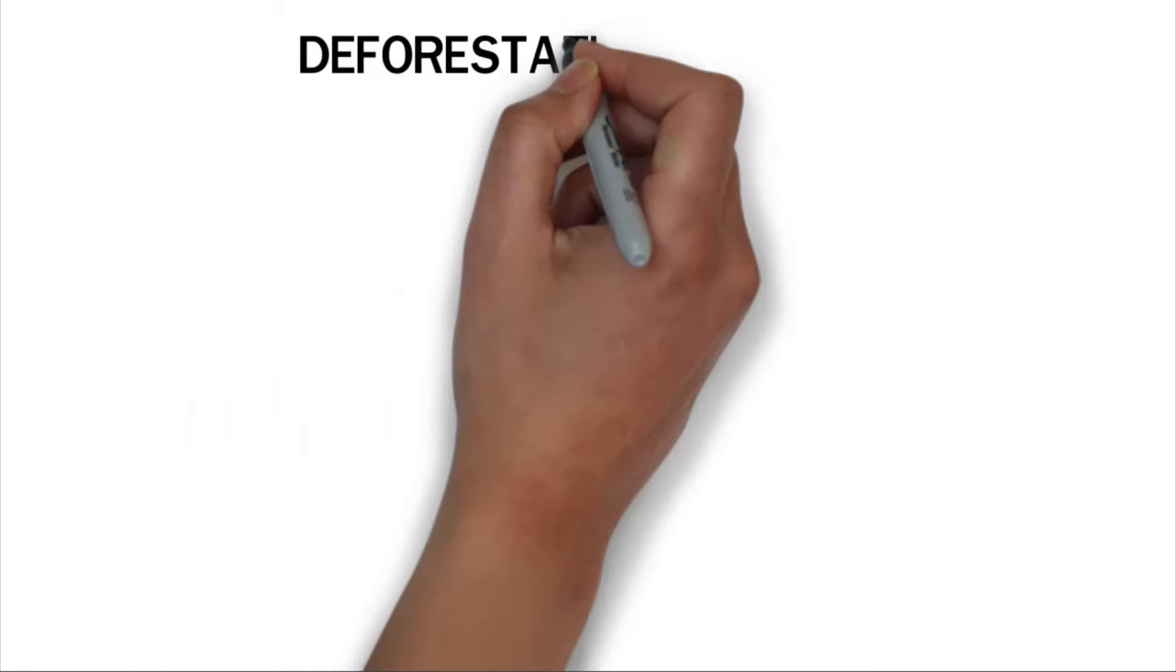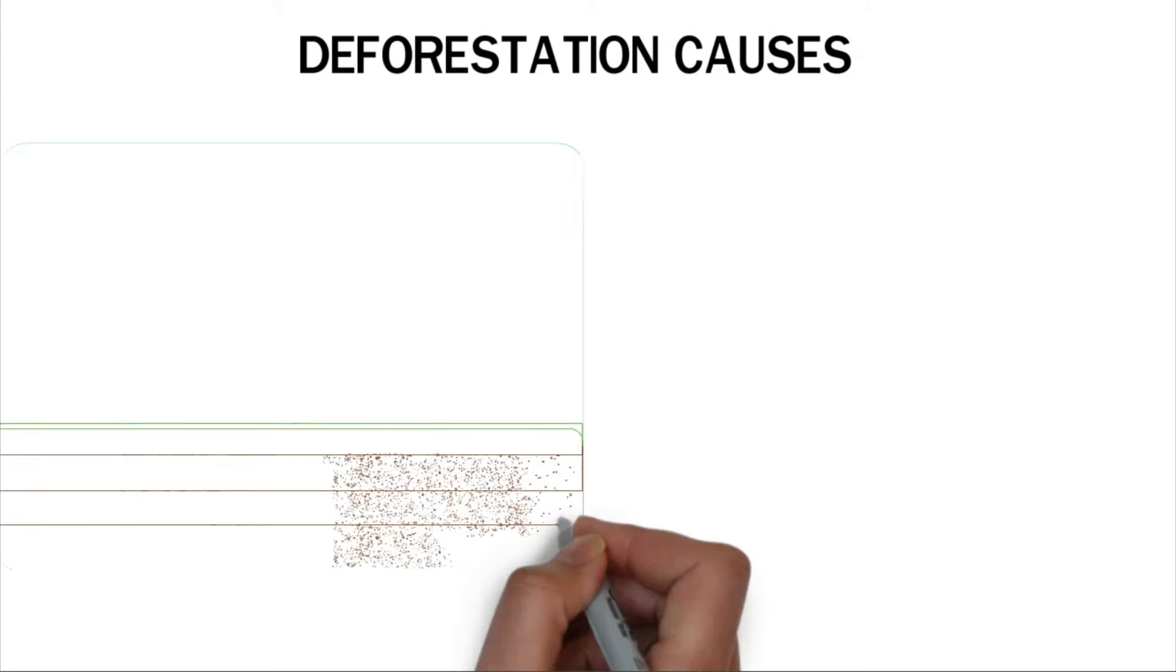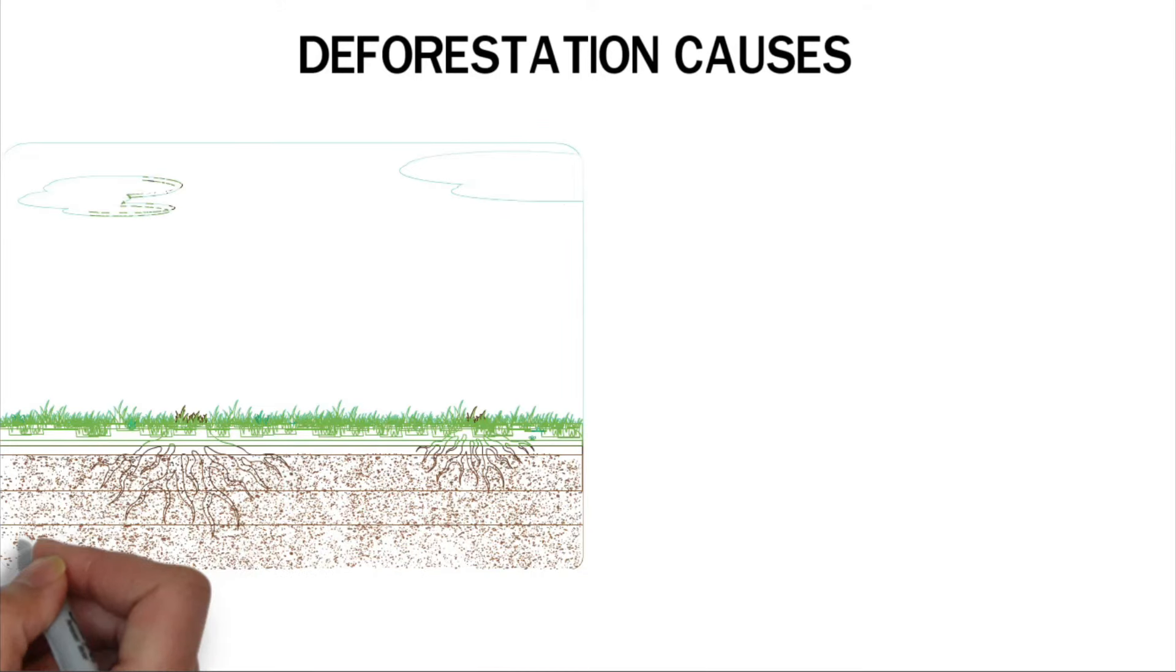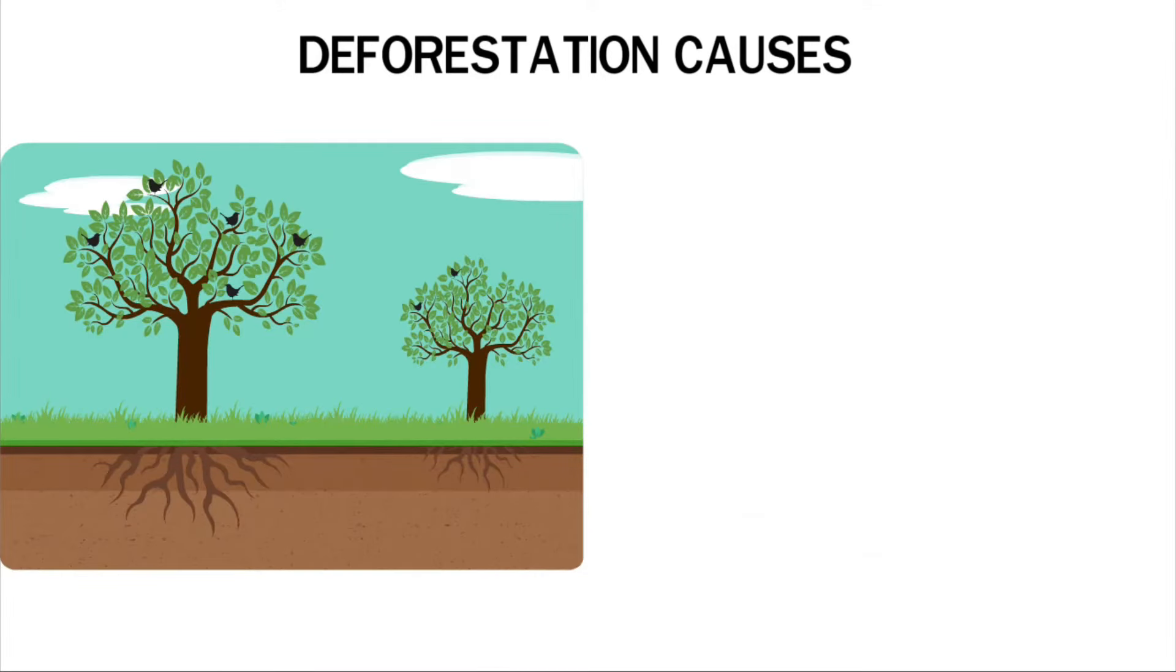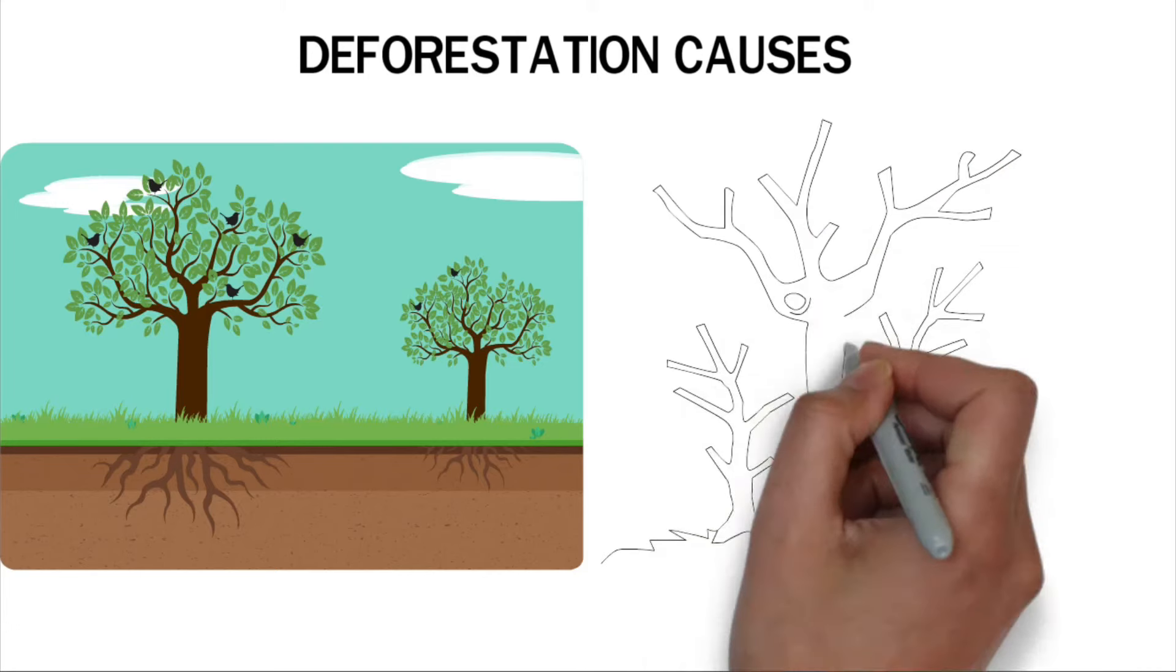Causes of deforestation. Deforestation can occur due to several reasons. When trees are deliberately cut to create room for other activities, it causes deforestation. Certain accidental disasters can also lead to the loss of forest cover.